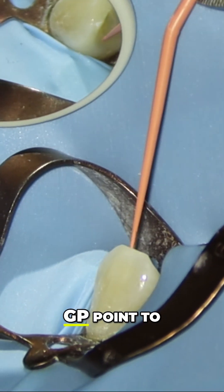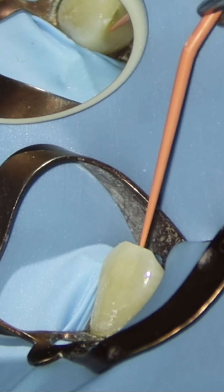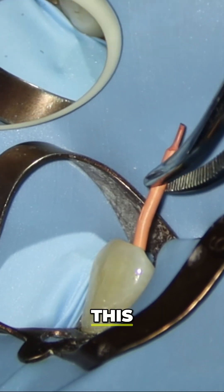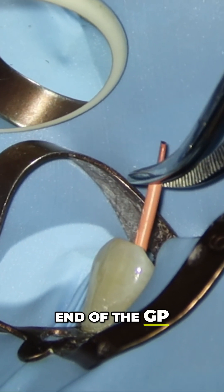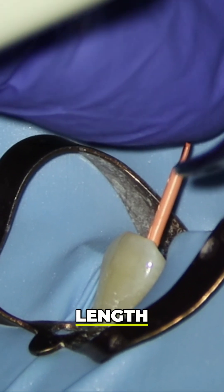I'm going to measure my GP point to 20.5 and then I'm going to push this to length. And I'm going to make a tiny little bend at the end of the GP cone. And as I push this to length, the GP cone pushes past this measurement.